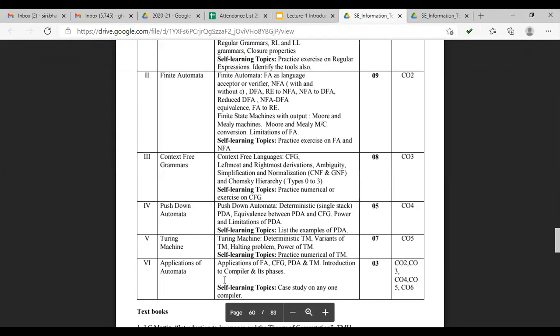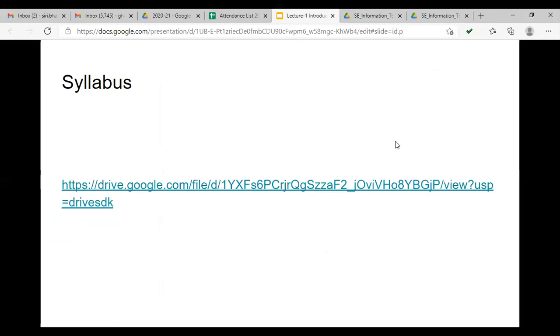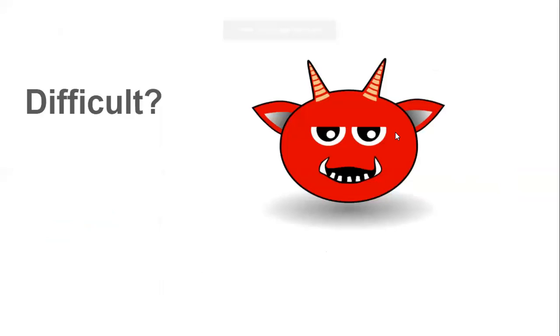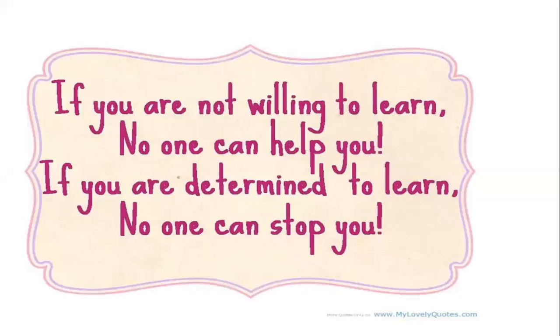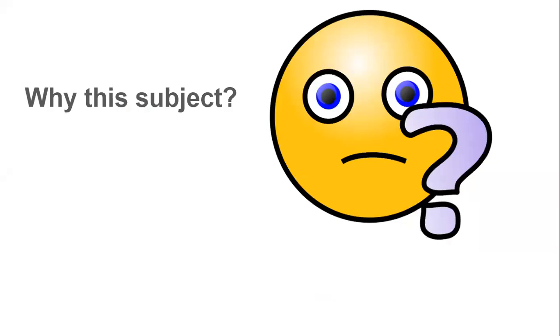The last topic is applications of automata. So these are the things we'll be learning in this subject. Is the subject very difficult? Yes, it is, until you understand it. As someone said, all things are difficult before they are easy. If you learn it, it is very easy; if you don't, it is very difficult. It is very easy to score and very easy to fail. If you are not willing to learn, no one can help you; if you are determined to learn, no one can stop you.